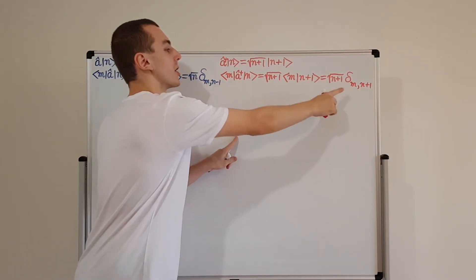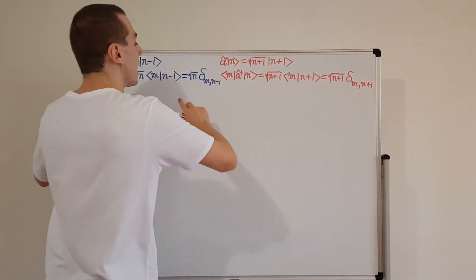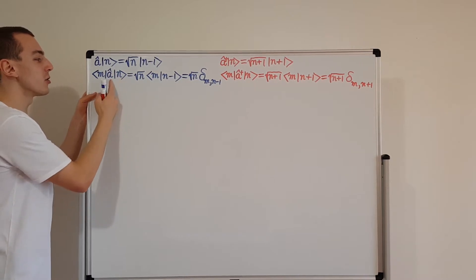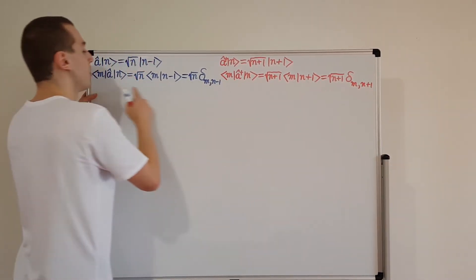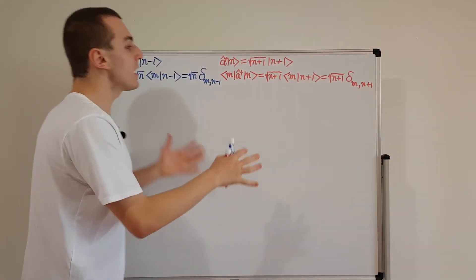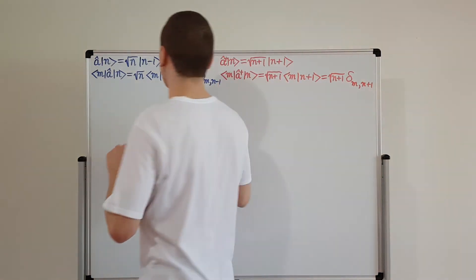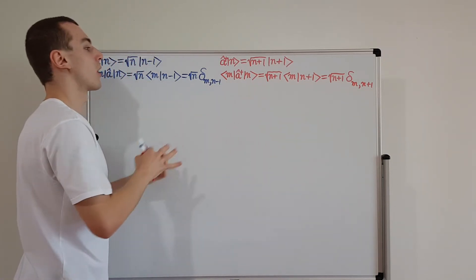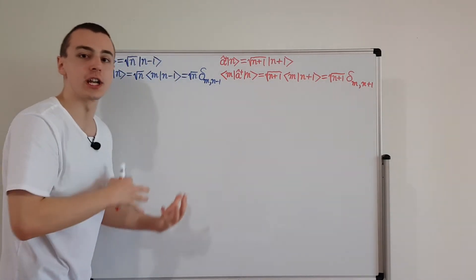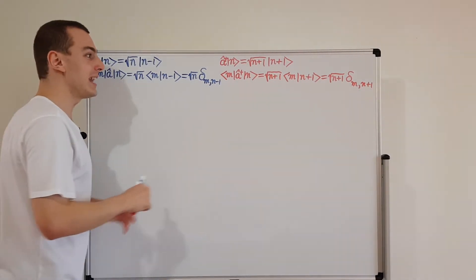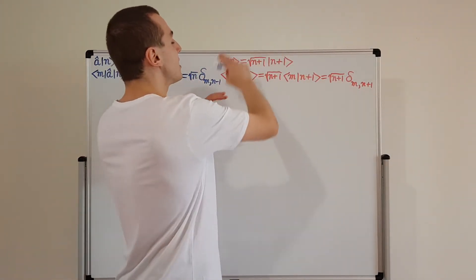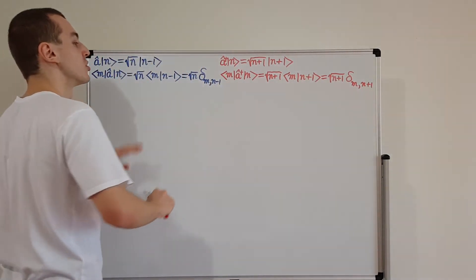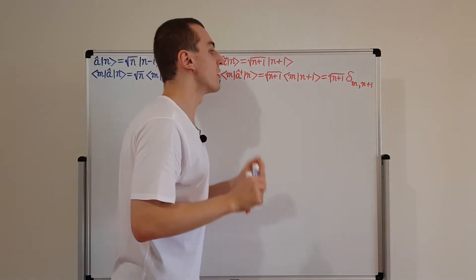One point to stress: we didn't have to do it this way. We could have acted on the bras instead. These operators could also have acted on the bras, and we would have gotten similar expressions — and in the end the same matrix representation. When an operator is inside a sandwich, it can act on the ket on the right or on the bra on the left. But when we act on the bra, we have to consider the Hermitian conjugate, because the bra is the Hermitian conjugate of the ket. Any equation written in terms of kets can be Hermitian-conjugated on both sides to get the equivalent bra equation.